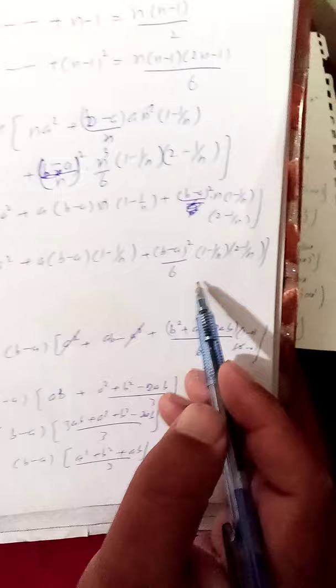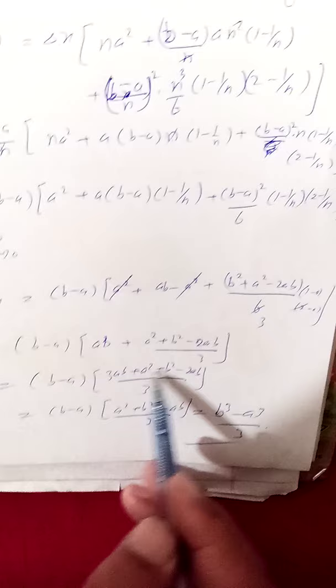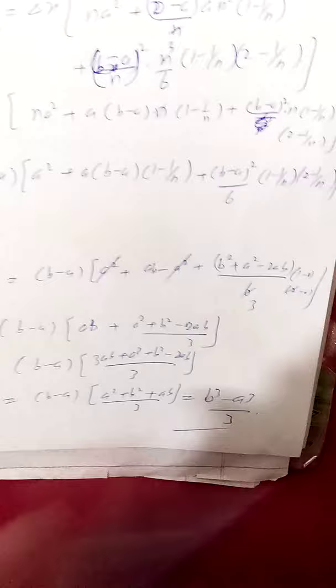Putting this limit as n tends to infinity, we get (b−a)·[a² + a(b−a) + (b−a)²/3]. In Riemann theory, as n tends to infinity, this becomes the integral from a to b of x² dx, which equals (b−a)·[a² + a(b−a) + (b−a)²/3]. Simplifying: a² cancels, and we get (b−a)·(a² + ab + b²)/3 — taking LCM and simplifying — giving (b³ − a³)/3, which is the required result.